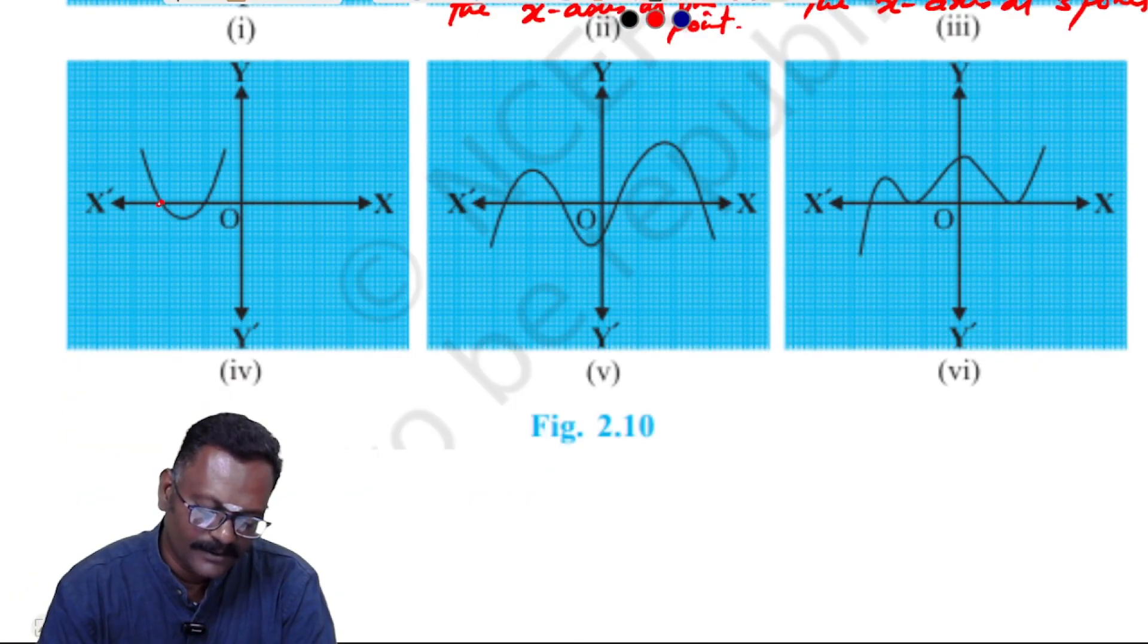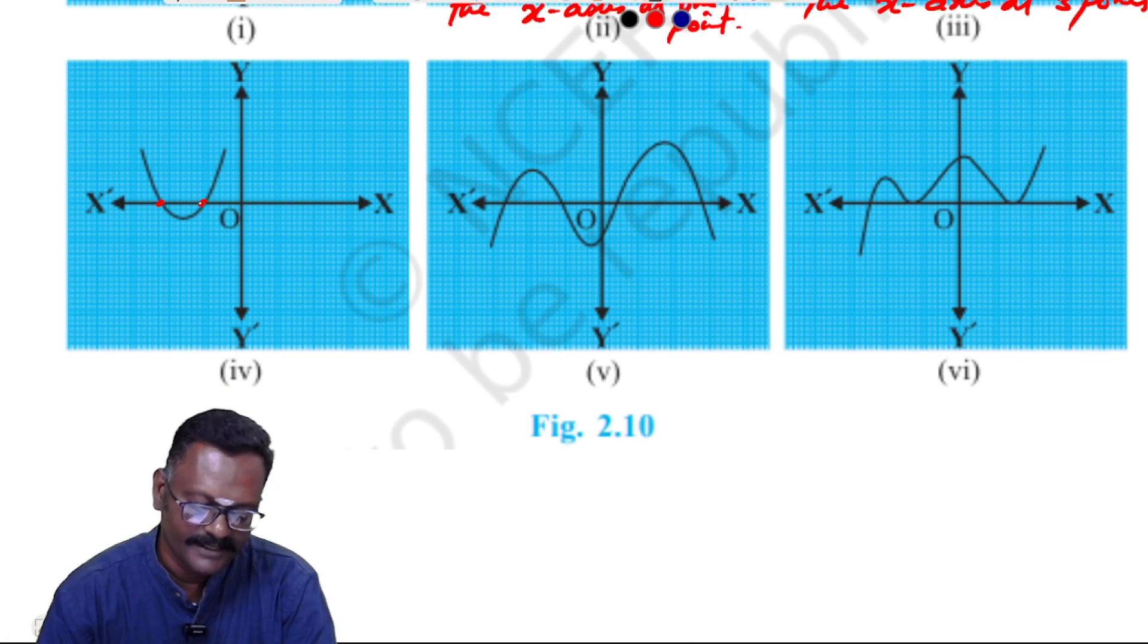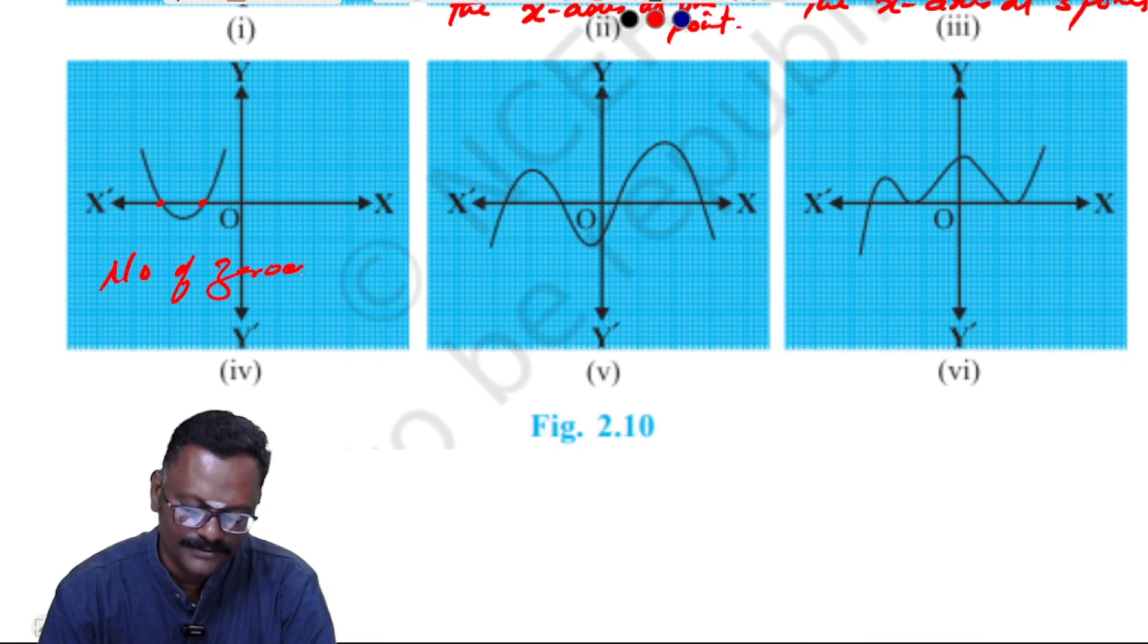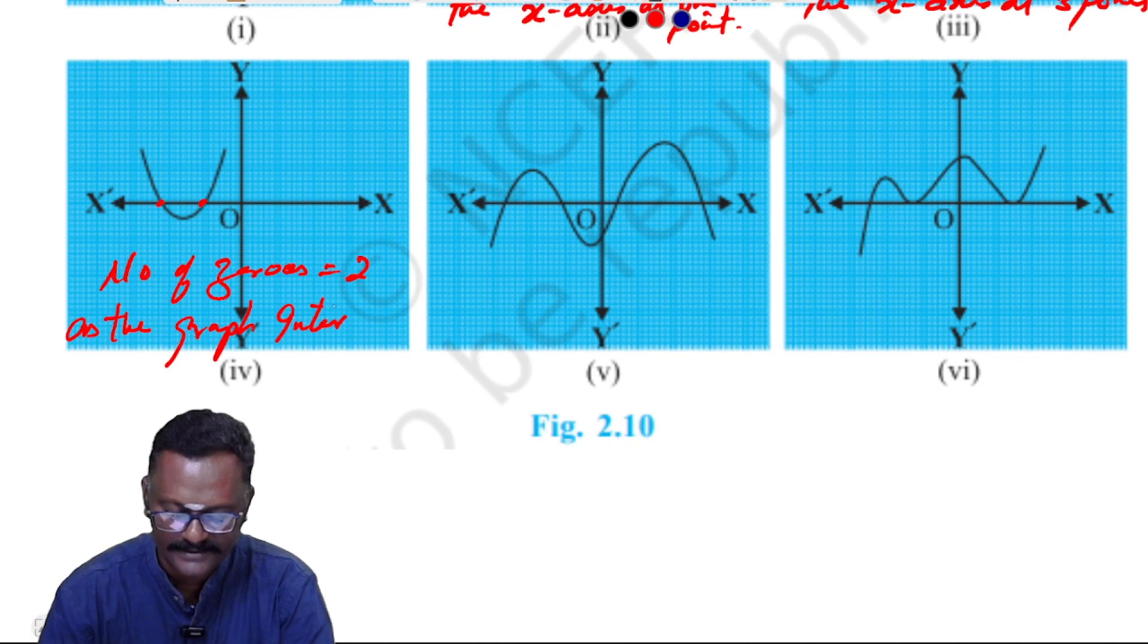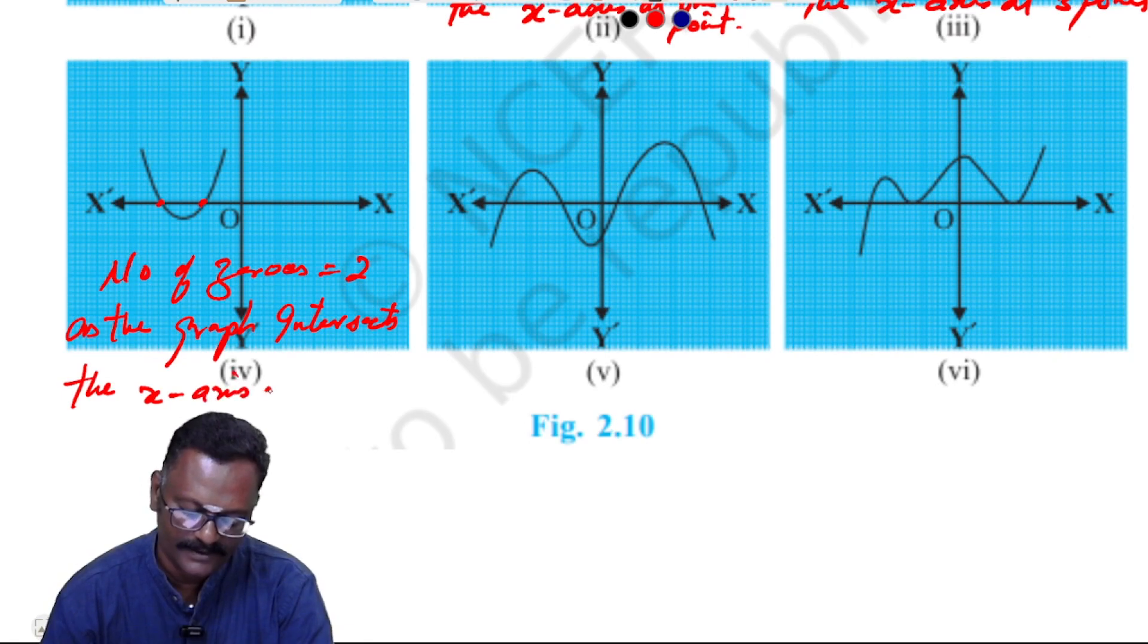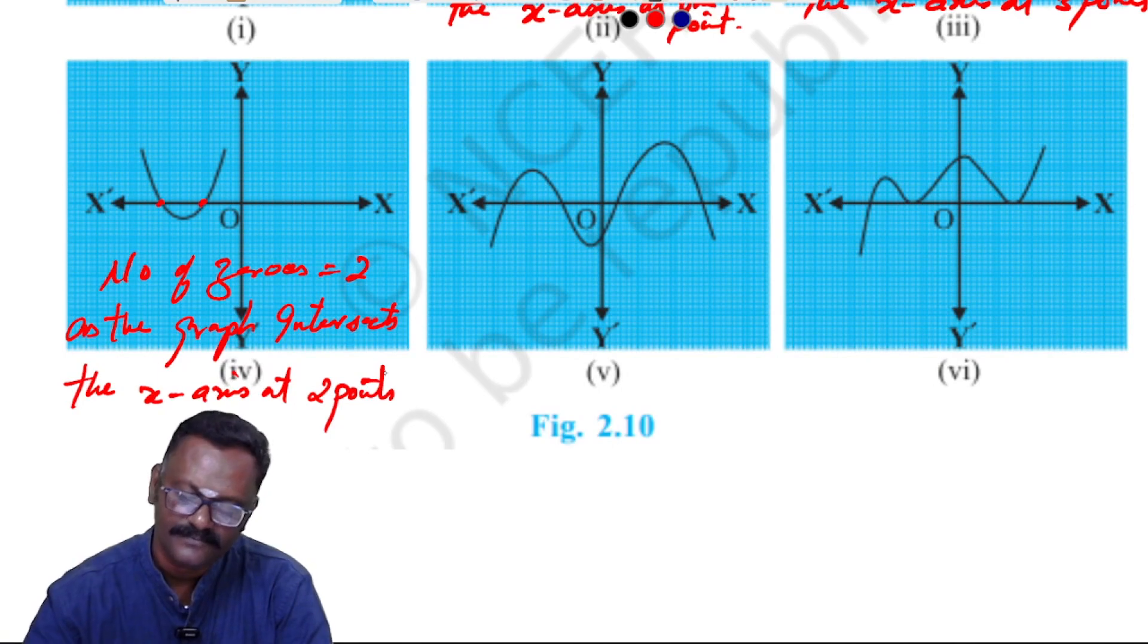Fourth case: The graph intersects two times, so number of zeros equal to two. Reason: as the graph intersects the x-axis at two points.